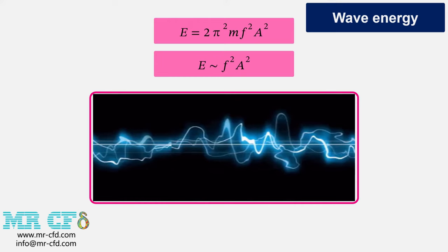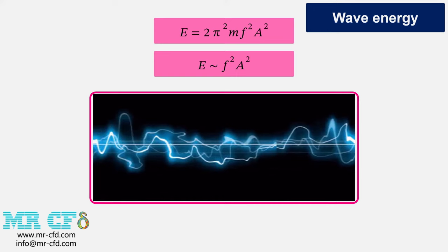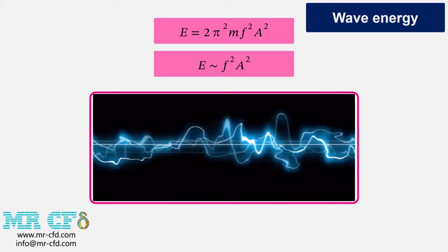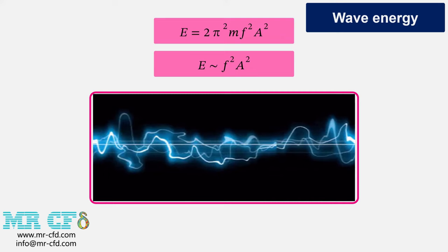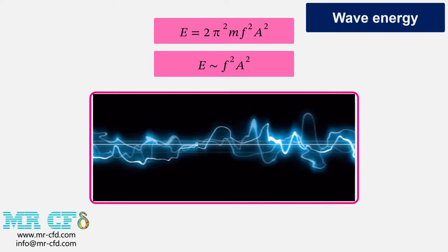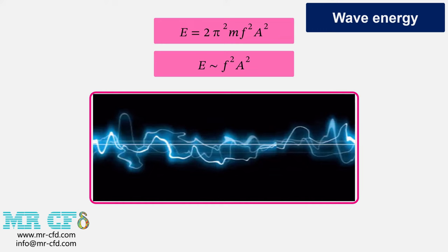Each type of wave carries energy with it and when the waves enter from one environment to another material environment, they also transfer their own energy to the new environment. In fact, it is the same energy transferred into the environment that causes the particles of that environment to vibrate and as a result of transmission of vibration from particle to its neighboring particle, the wave energy spreads in that environment. Based on existing relationships and the relationship you can see in this slide, the energy transferred from a wave to the particles of an environment has a direct relationship with the second power of the frequency and amplitude of that wave.